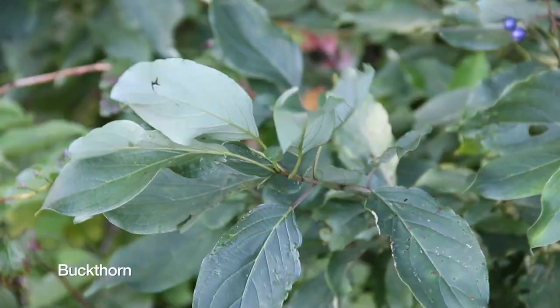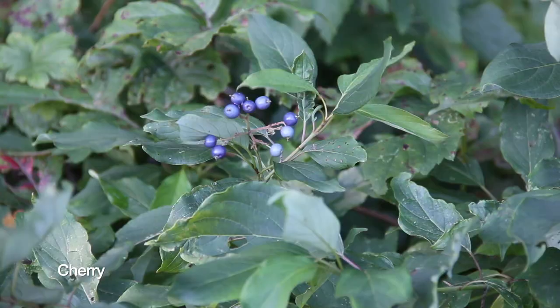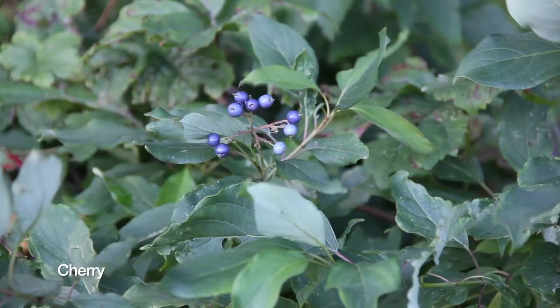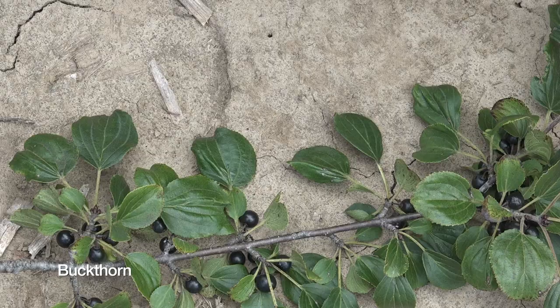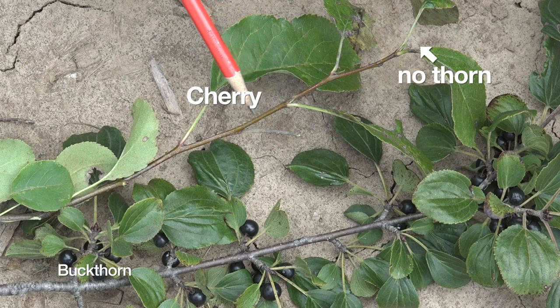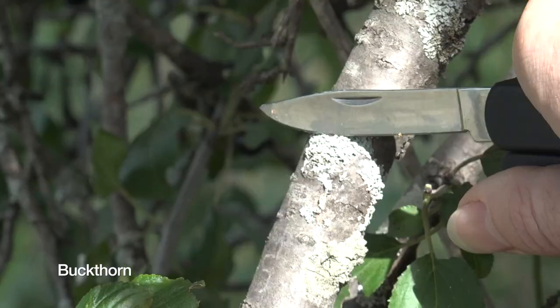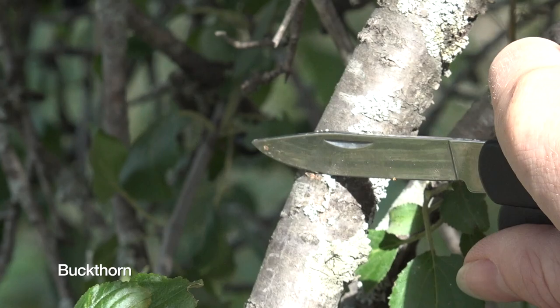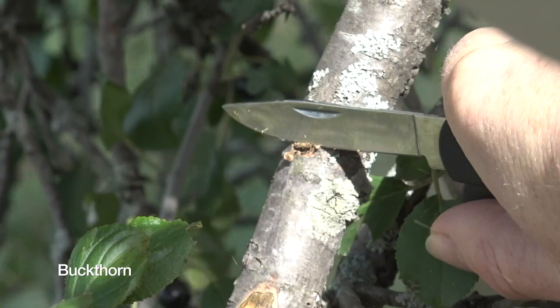There are some native look-alikes. Cherry is one that's often confused with buckthorn. You can see the difference between a buckthorn twig and a cherry twig — no thorn at the end of the bud on a cherry, and it also has an alternate leaf arrangement. Buckthorn outer bark and leaves are similar to cherry and plum, so another way to confirm this is really buckthorn is orange sapwood in medium-sized stems, which can help distinguish it from our natives.